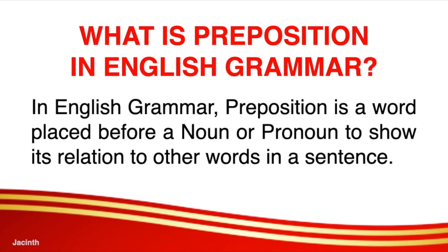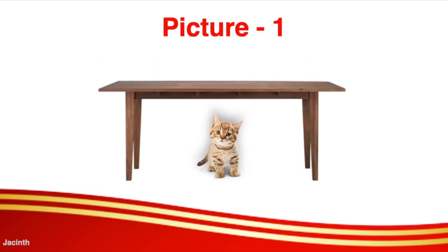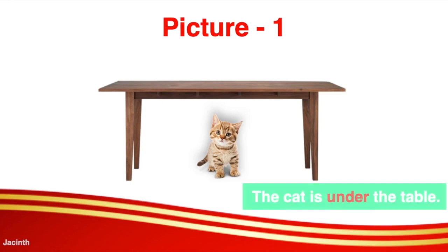To help you understand this lesson more, let us study the following pictures together. There you can see the table and a cat. So what can you say about this picture? You can say that the cat is under the table. So the word 'under' there is a preposition — it shows the relation or the position of the cat with regards to the table.